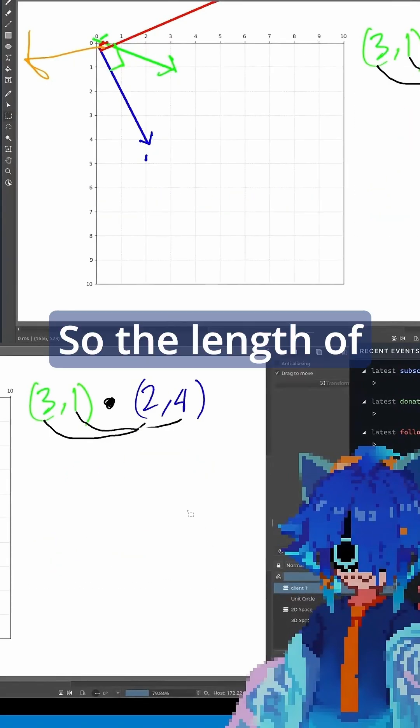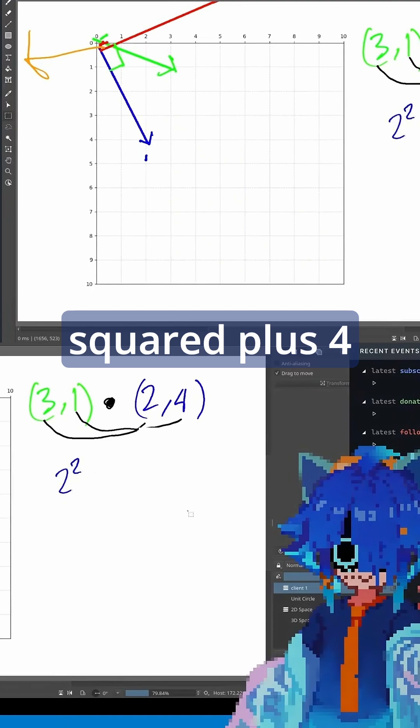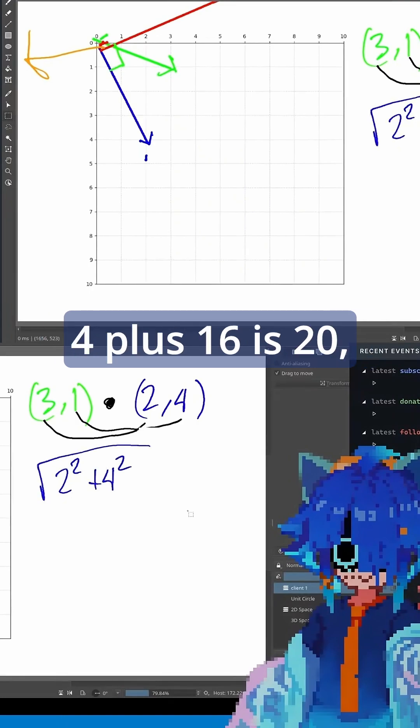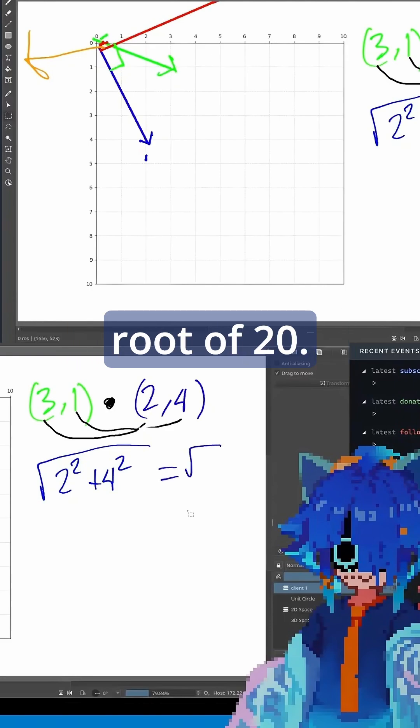So the length of this vector is 2 squared plus 4 squared, square root of that, so that would be 4 plus 16 is 20, so the square root of 20, and the square root of 20 is approximately 4.47.